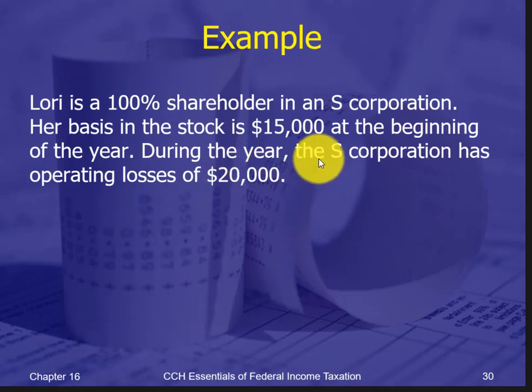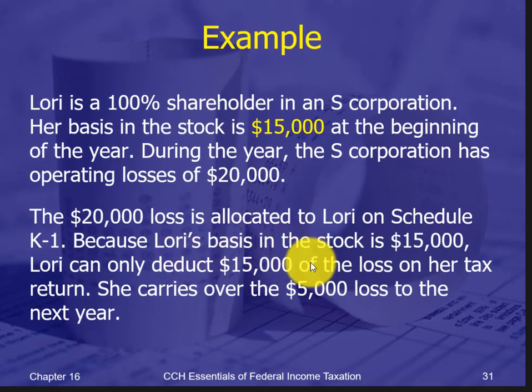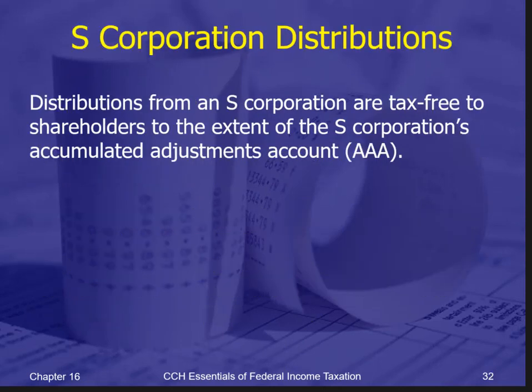Here is a single-year example: a 100% shareholder starts with a $15,000 basis. During the year, the S-Corporation has operating losses of $20,000. She cannot use it all — she can only deduct $15,000 against her basis, and must carry over the remaining $5,000 loss to the next year. Distributions from an S-Corporation are tax-free.